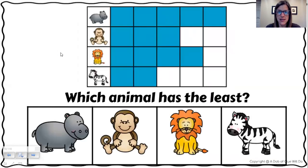Now the next question says, which animal has the least? We talked about most, that's the biggest number. Least is the opposite. Least means the smallest number.